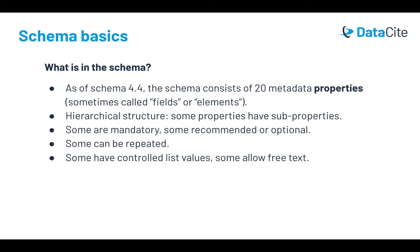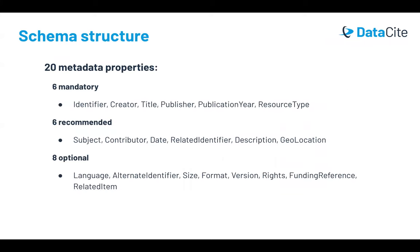Some properties can be repeated. Some have controlled list values, where the property is restricted to a certain set of values. Of the 20 metadata properties, six of them are mandatory: identifier (which is the DOI), creator, title, publisher, publication year, and resource type.